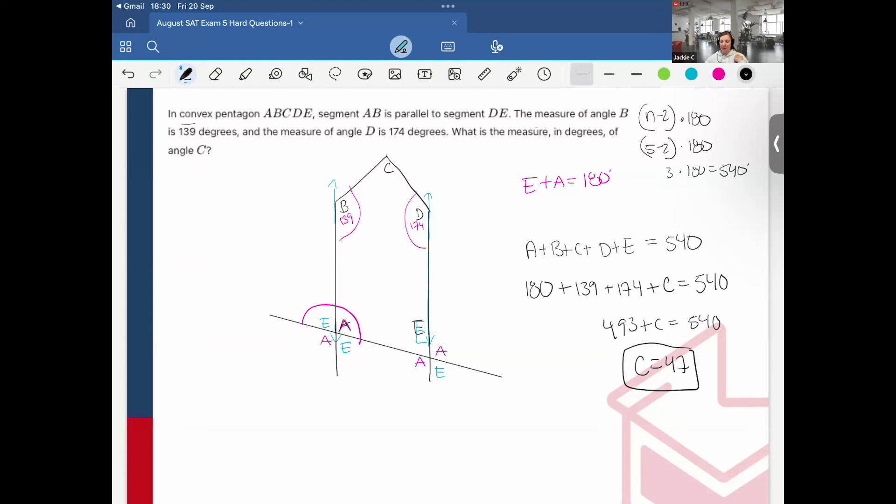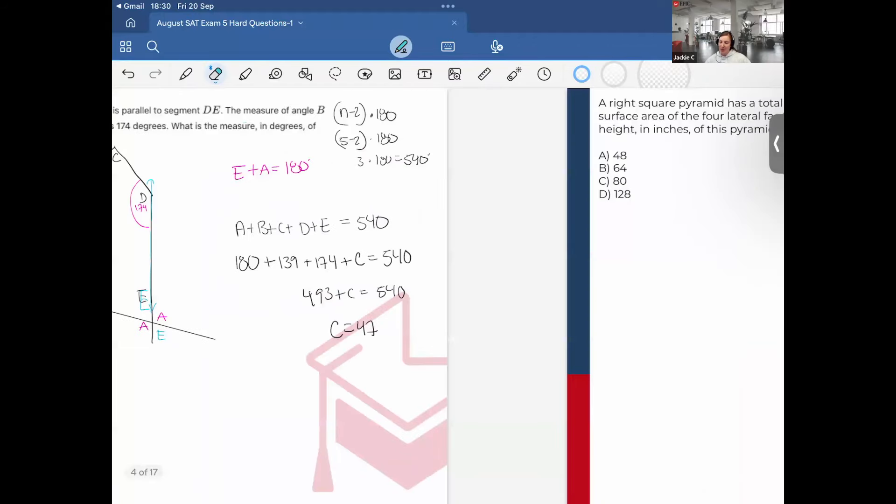So a convex pentagon is just a normal looking pentagon. I suppose they could do concave pentagon which would look like this, five-sided but indented on top. Language.